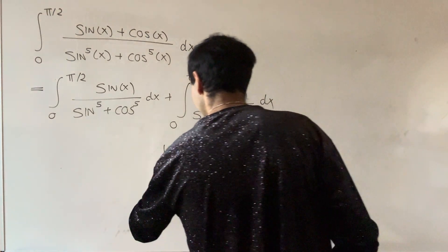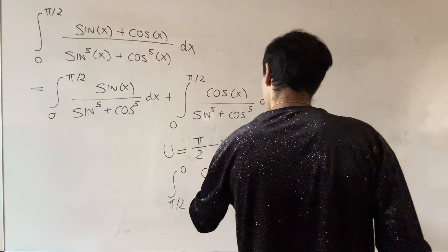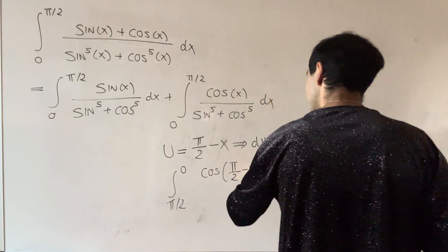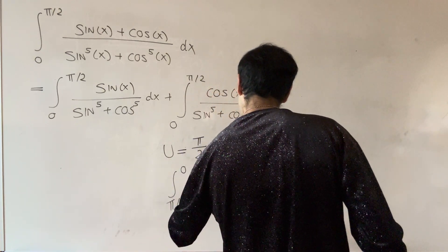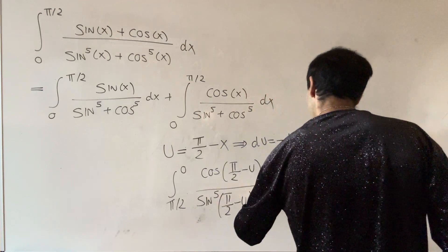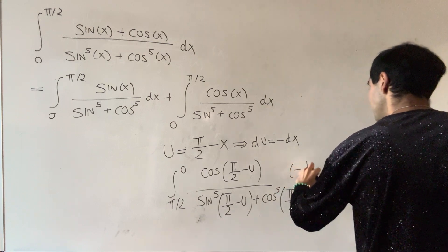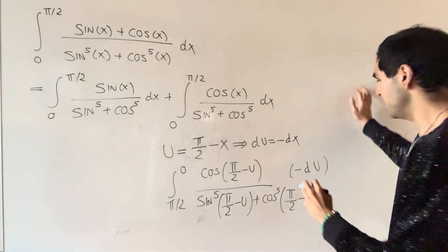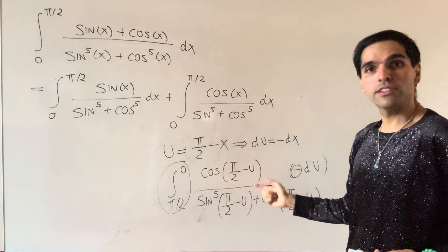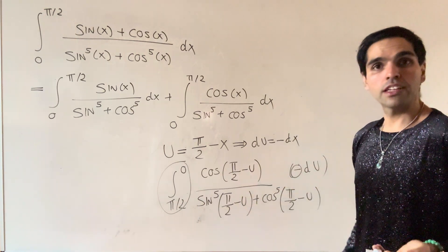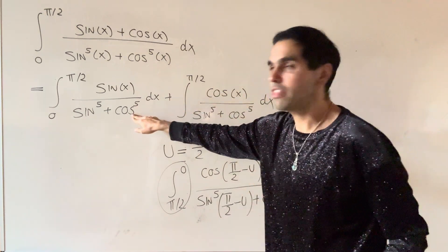This is a standard trick. Essentially you get the integral from pi over two to zero of cosine of pi over two minus u, over sine to the fifth of pi over two minus u plus cosine to the fifth of pi over two minus u, times minus du. The minus sign corrects the integral, and cosine of pi over two minus u is sine of u, and those two terms in the denominator get switched. So in the end, the value of the second integral is the same as the value of the first.